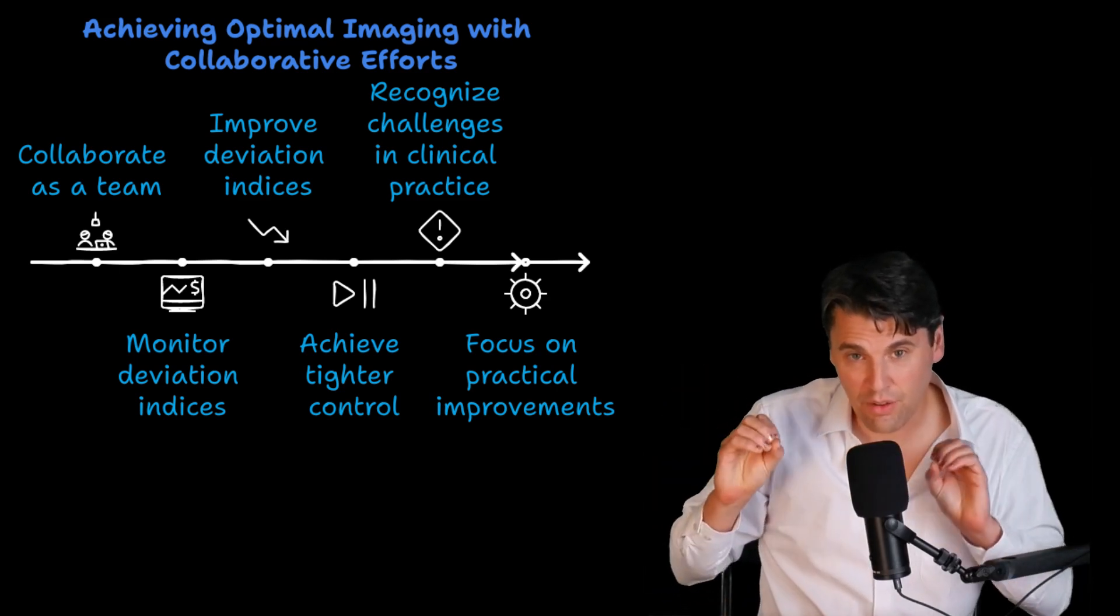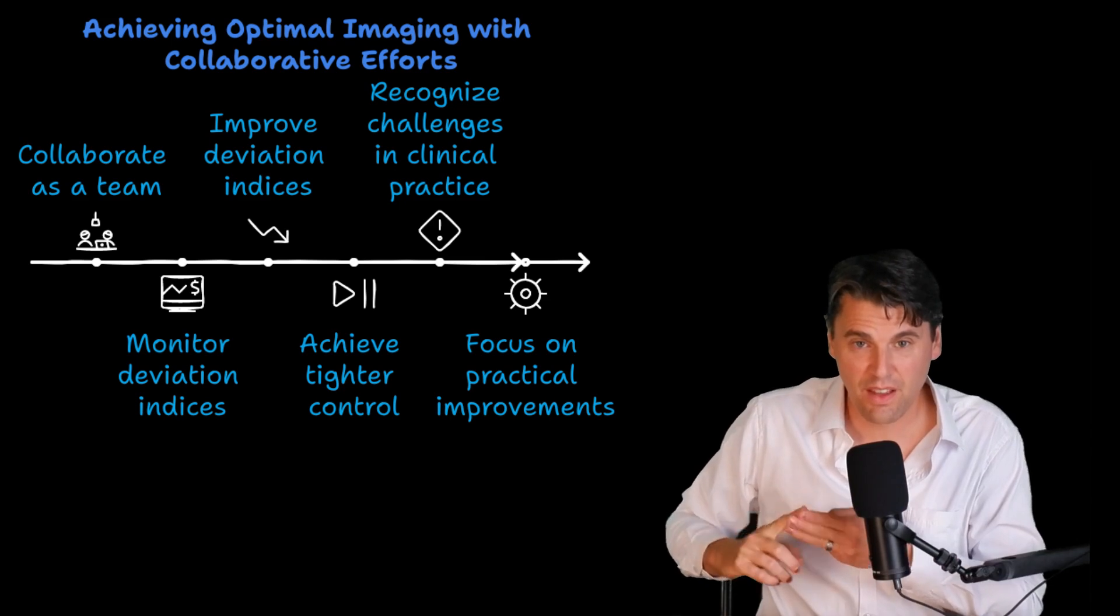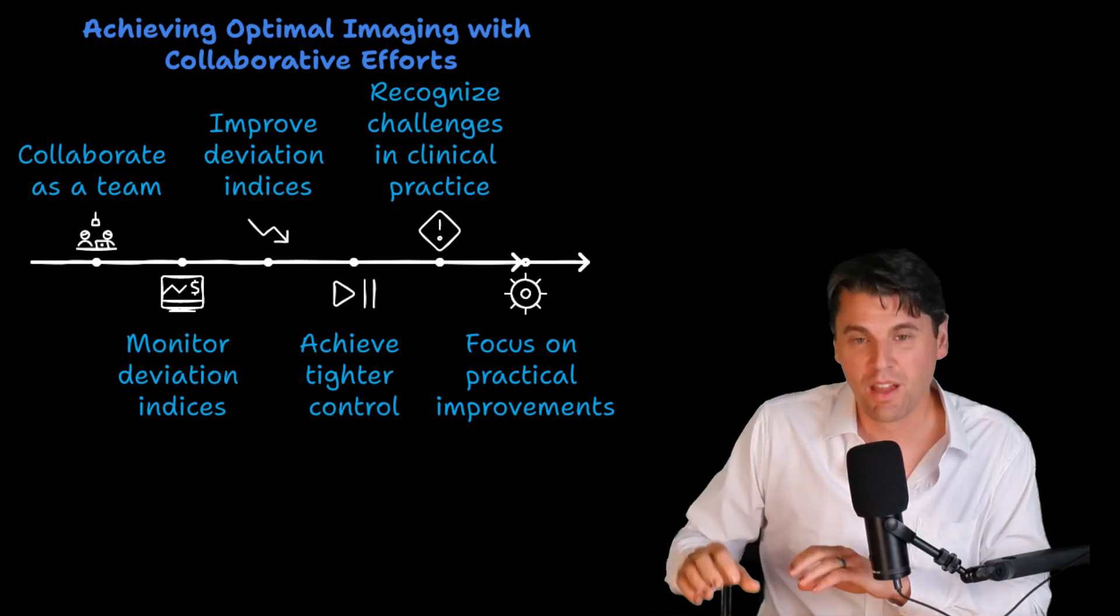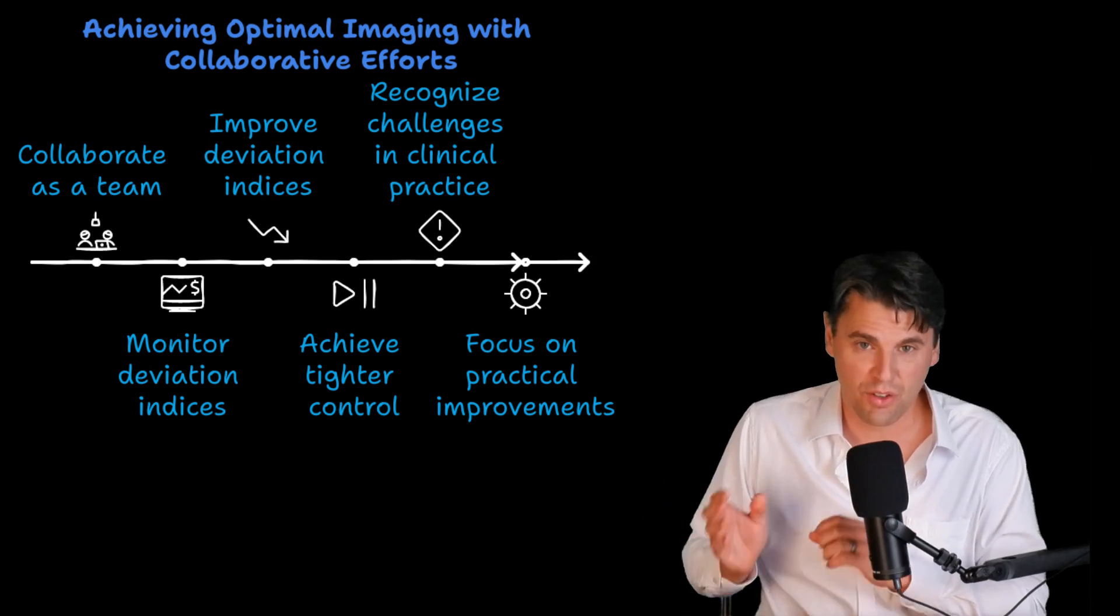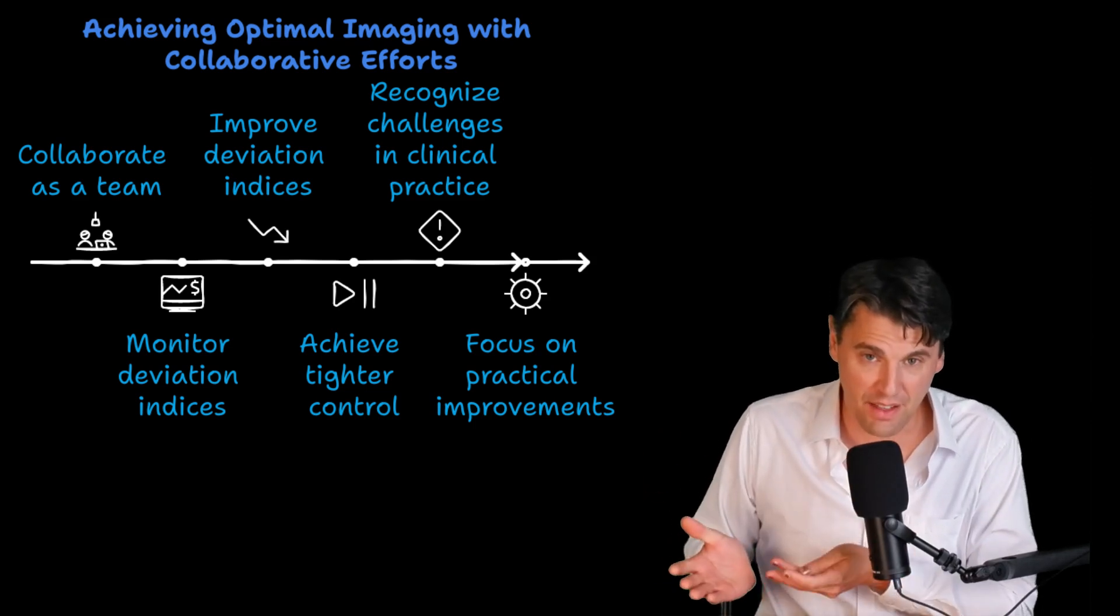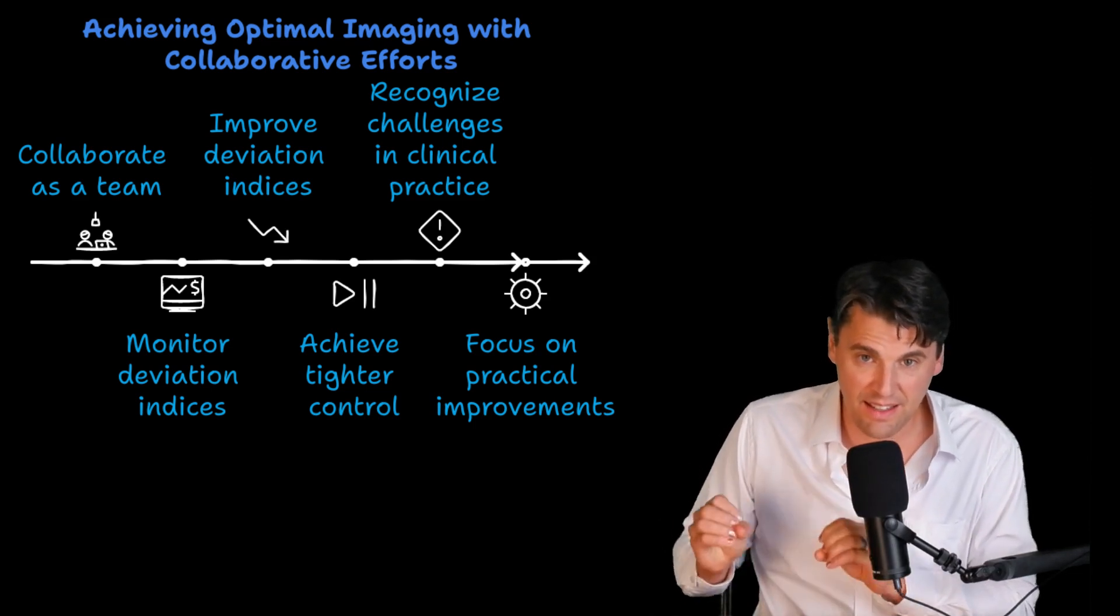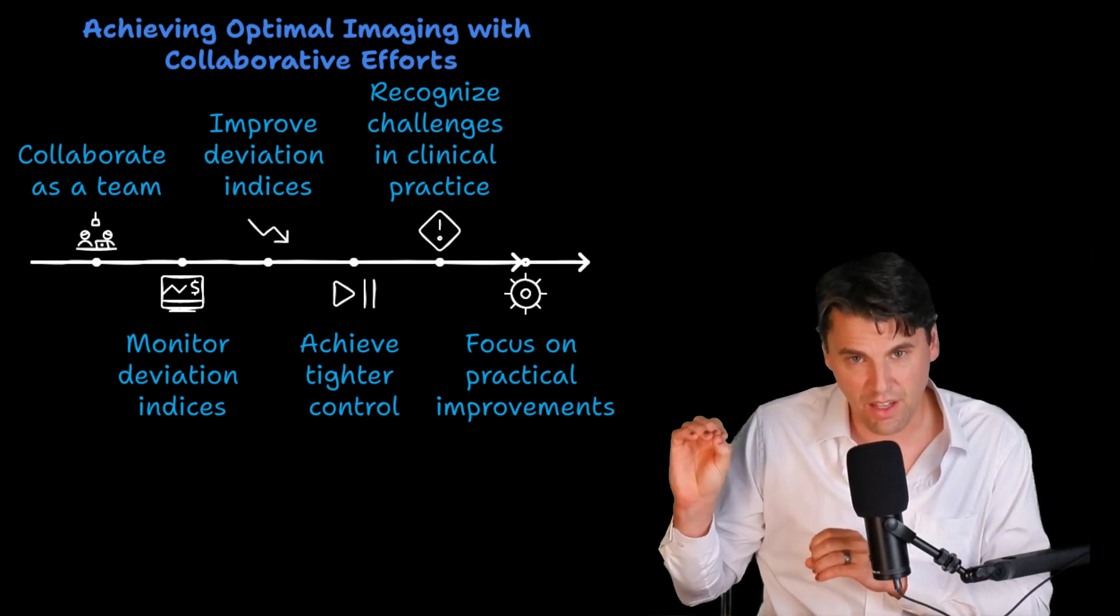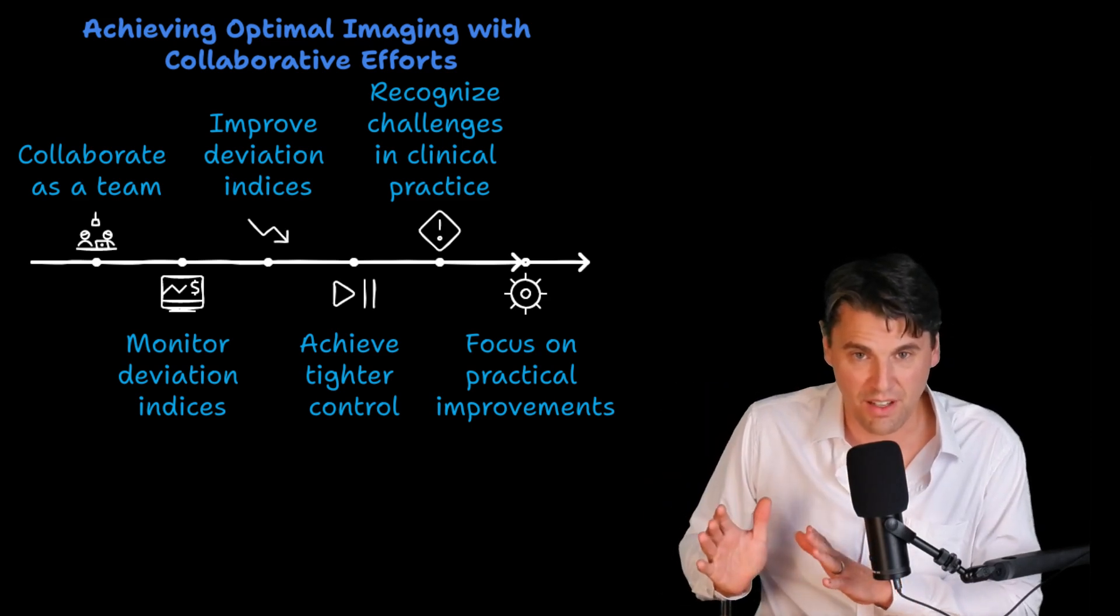As you're working together between the technologists, radiologists, medical physicists, the first thing is you need to be working collaboratively because you're on the same team. You're trying to accomplish the same goal of getting the best images you can for that radiation dose to the patient. You want to be monitoring these regularly and trying to improve your deviation indices, get them into a narrower range such that you're showing tighter control of the actual deviation index.